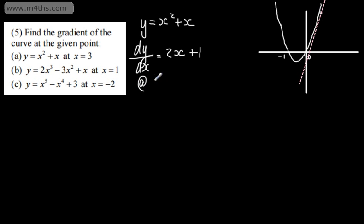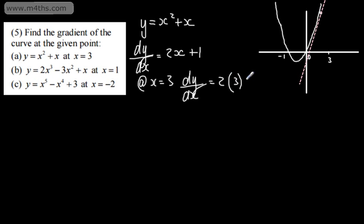So at x is equal to 3, the x-coordinate — at x is equal to 3, we can say dy by dx, the gradient function, will be 2 lots of 3 plus 1. That's going to give me 6 plus 1, which is 7. So that's the gradient. Clearly, as the values of x increase, the curve is going to get steeper and steeper. As it decreases down to 0, it's going to get flatter and flatter.